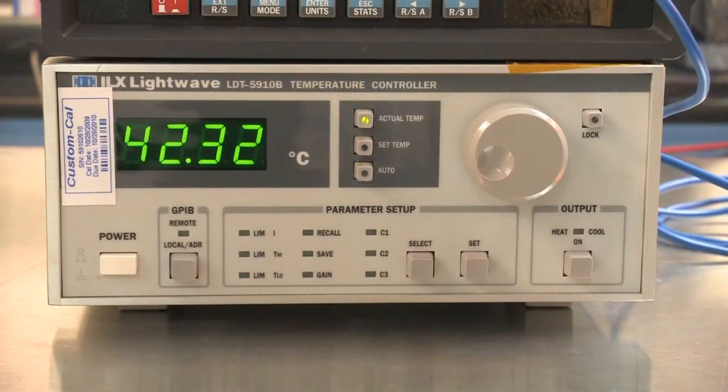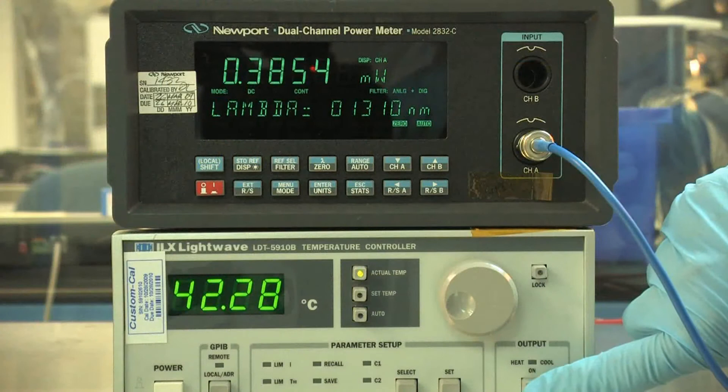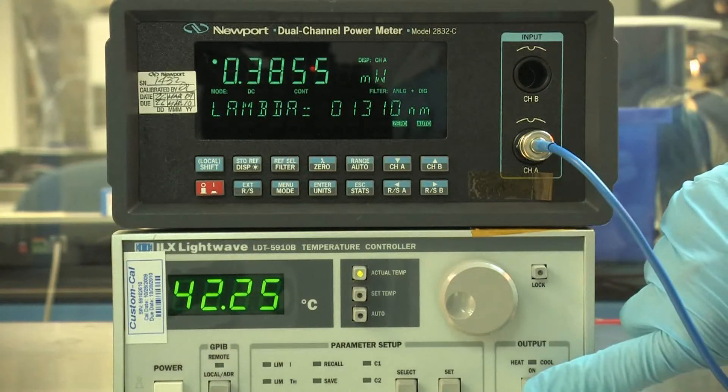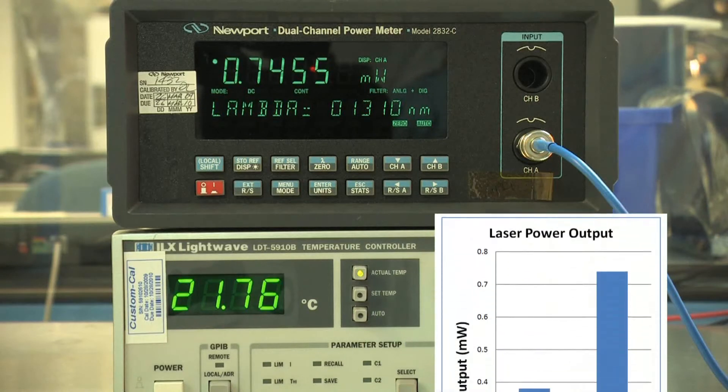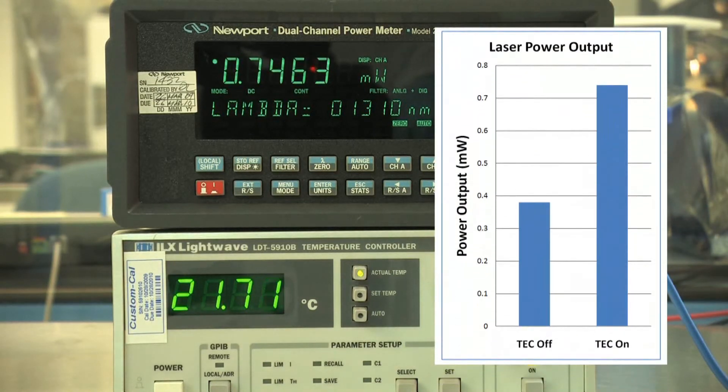The temperature of the diode reaches about 42 degrees Celsius. When the TEC is turned on, the temperature of the diode quickly cools to approximately 21 degrees. The output level of the laser diode nearly doubles from 0.38 milliwatts to 0.74 milliwatts.